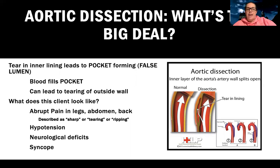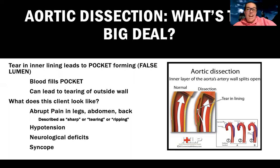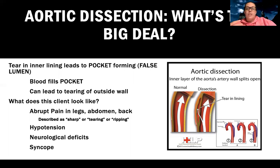Patients with aortic dissection usually complain of abrupt pain — that's what makes it different from many other conditions. It can be in their legs, abdomen, or back, and it is usually described as sharp, or even a tearing or ripping sensation. They'll have signs of hypotension and poor perfusion — neurological deficits or syncope — because blood is filling pockets instead of going to the organs.